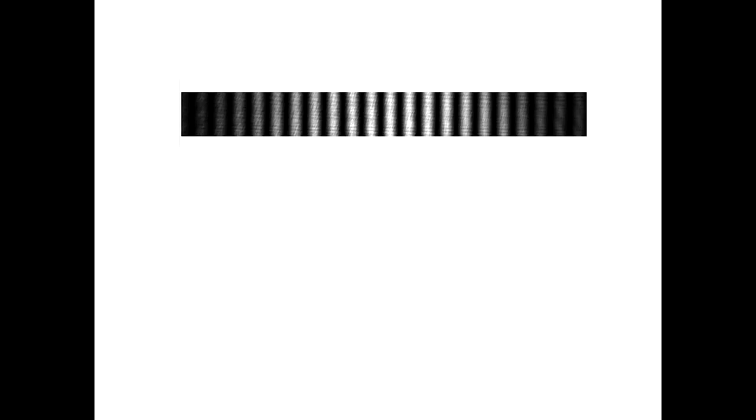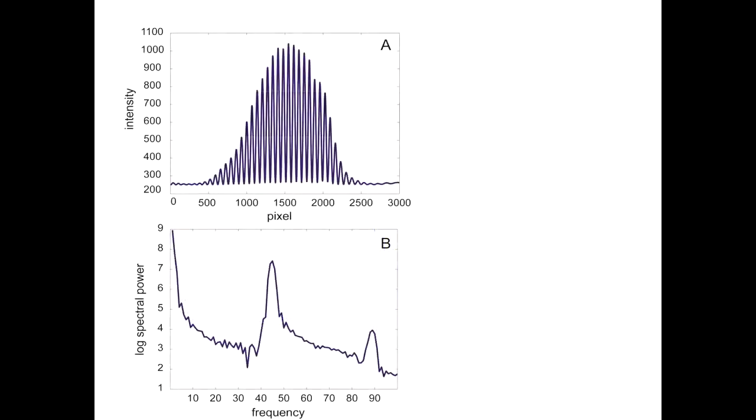When you look at this in software, you can see how bright is each band, and you get a picture that looks something like that. So you get this sort of Gaussian-looking shape, and that's the way of looking at the interference. So if we start with that pattern in picture A, you can do a Fourier transform, which is picture B, and the peak in the middle is now the double-slit spectral power.